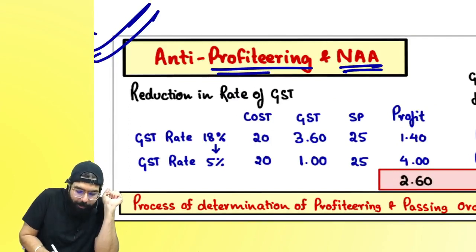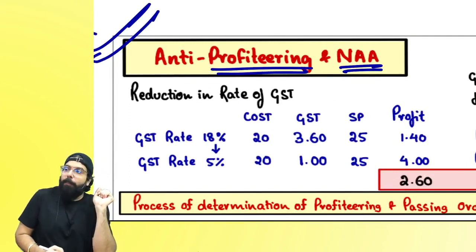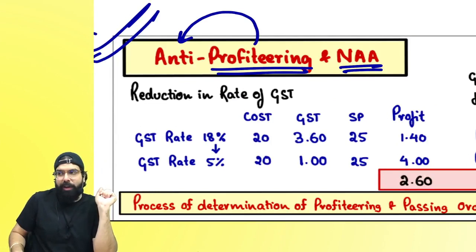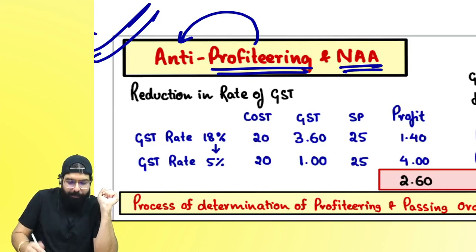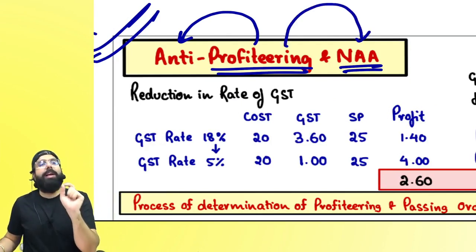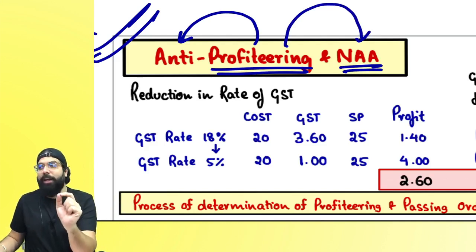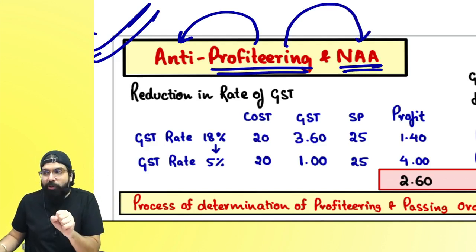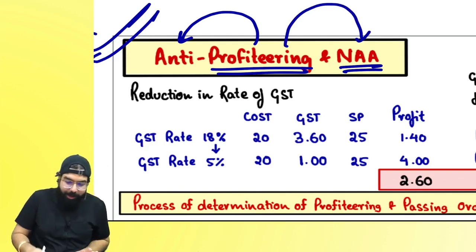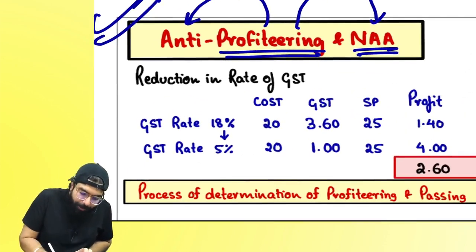People are doing profiteering, so the government is going ahead and getting anti-profiteering rules. If people are going ahead and doing profiteering, there is an authority known as the National Anti-Profiteering Authority who will catch you and penalize you.